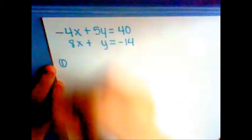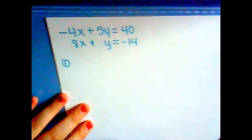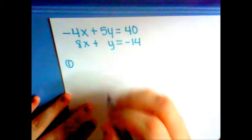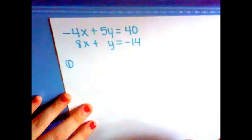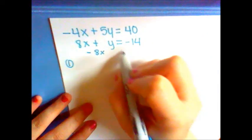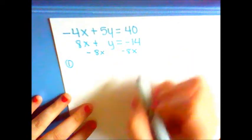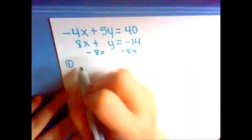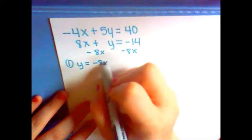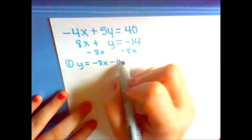Step 1. You take the 8x plus y equals negative 14 and subtract the 8x. That becomes y equals negative 8x minus 14.